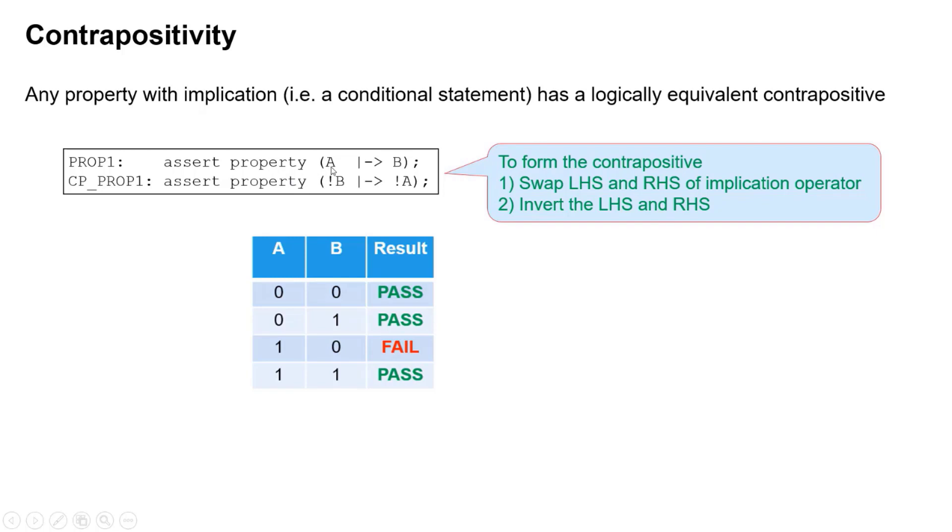So here we can see a simple assertion A implies B. The contrapositive of that is not B implies not A. If you look at this truth table here, you'll see that both pass and fail under exactly the same circumstances, therefore they are logically equivalent.